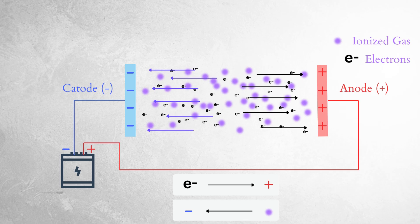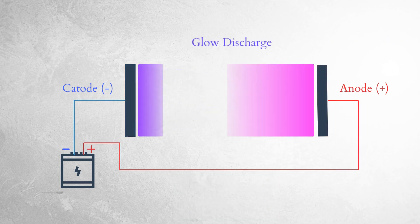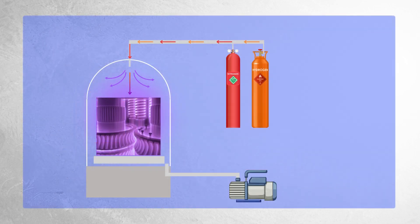The collisions of ions with the cathode provide enough energy to release more electrons from the cathode. Once excited, the ions lose their energy fairly quickly. One way they lose energy is by releasing photons, which is the light we see.